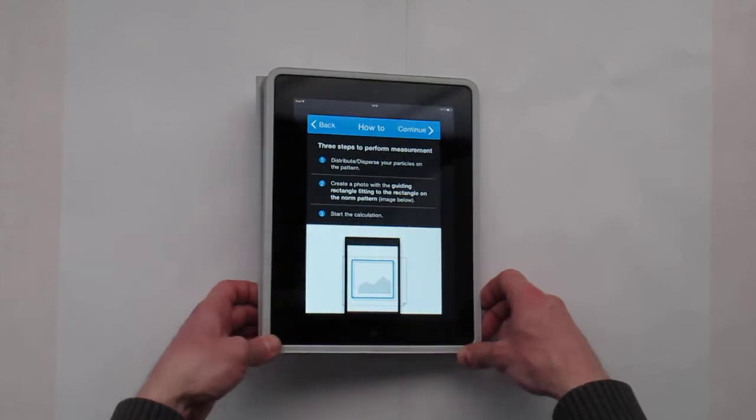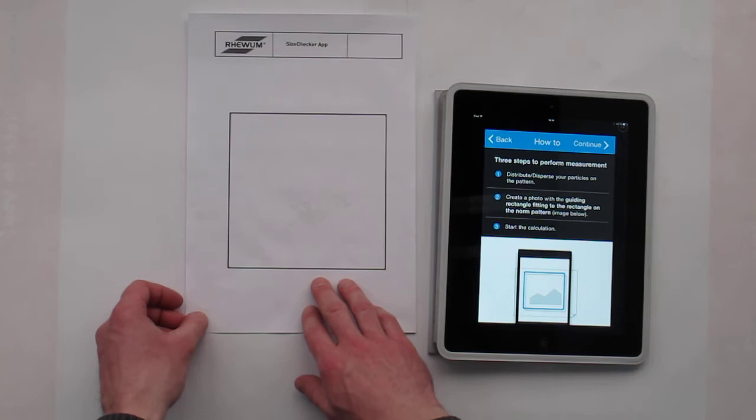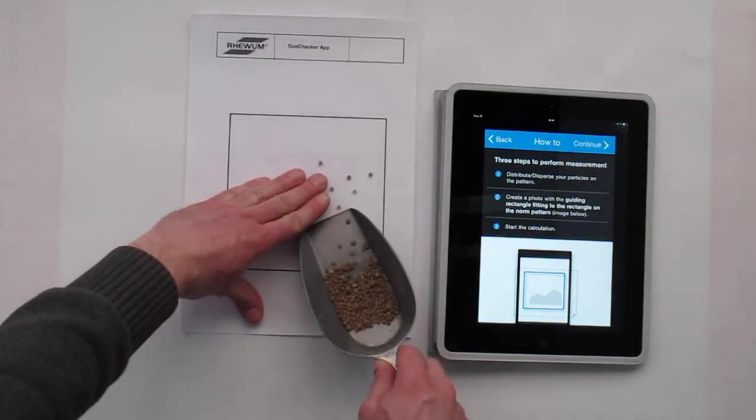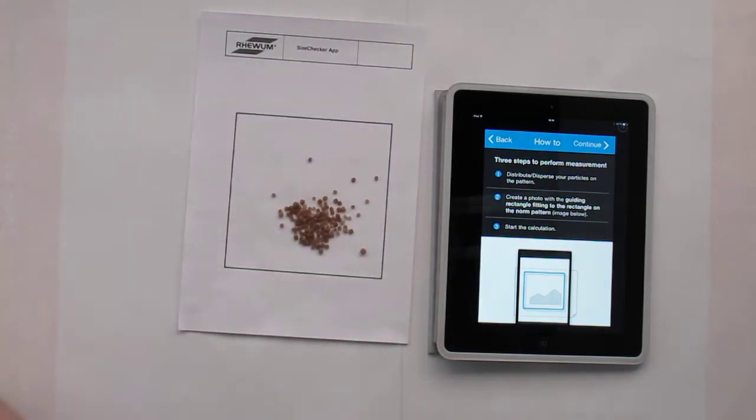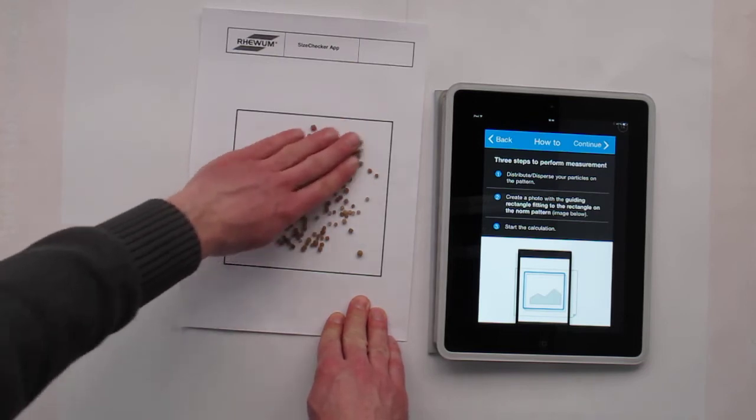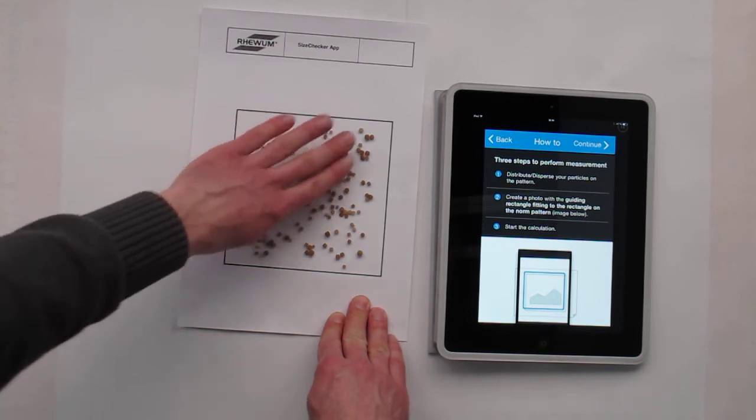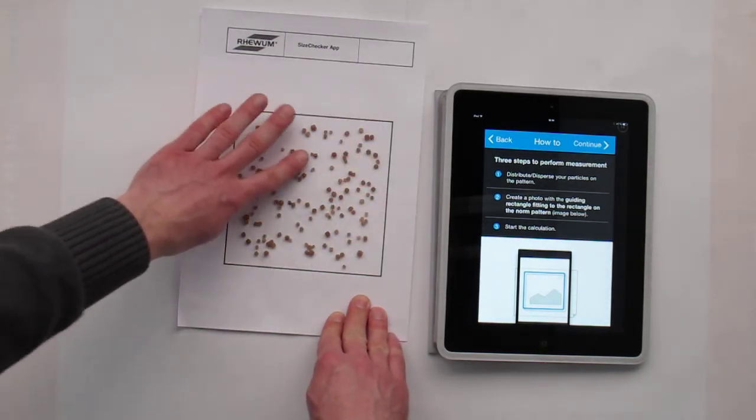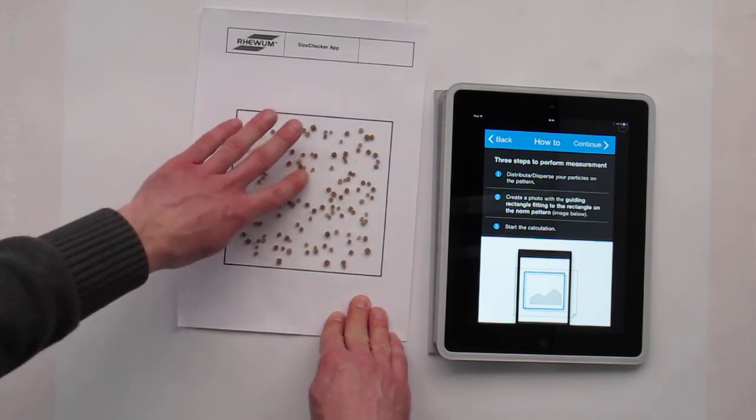In the next step, we have to prepare our sample. Select a pattern and bring the particles onto the pattern. Now we have to disperse them. Try to keep them separated so that each particle is individual, like this.